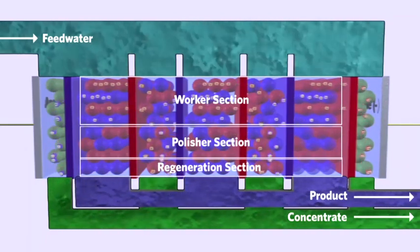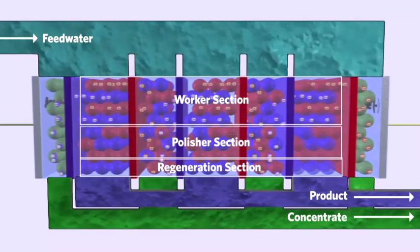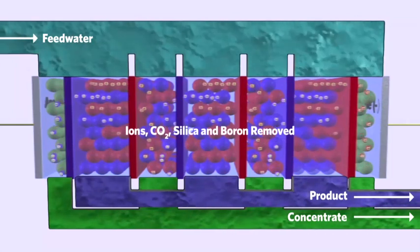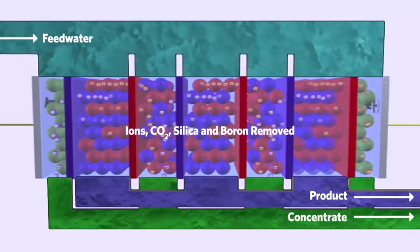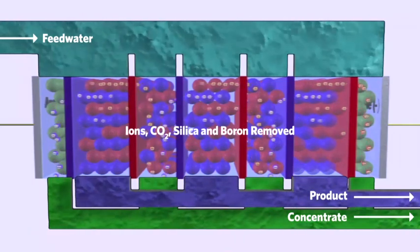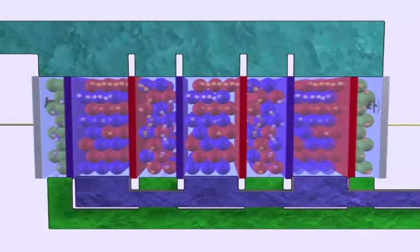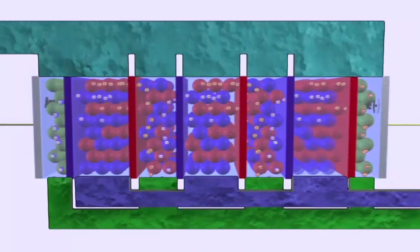And IonPure CEDI systems are more effective than other electrodeionization systems when it comes to removing dissolved materials such as salts, acids and bases, as well as weakly ionized materials such as dissolved organics, silica, boron, and carbon dioxide. This continuous regeneration process also eliminates pH shock and greatly extends the life of the resins.